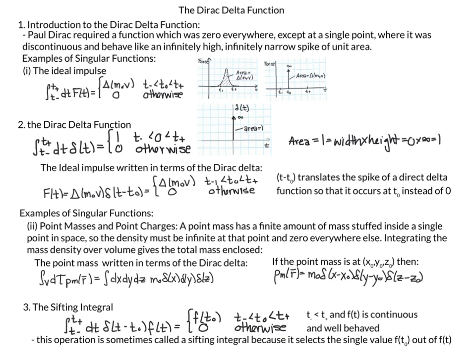If we center our interval around t equals zero, integrating from t-minus to t-plus and including the point zero, we get one because we include this spike. If we don't include this spike, the integral is zero. We then write the ideal impulse in terms of the Dirac Delta.